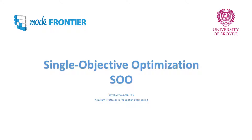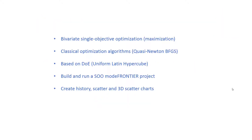In this video we are going to learn how to solve a single objective optimization problem, usually abbreviated as SOO, using modeFRONTIER software. We are going to solve a bi-parametric single objective optimization problem with the aim of maximizing our objective function. We'll use the quasi-Newton BFGS algorithm with a maximum of 400 function evaluations. The initial design will be created using a DOE method — Uniform Latin Hypercube — with 10 designs.